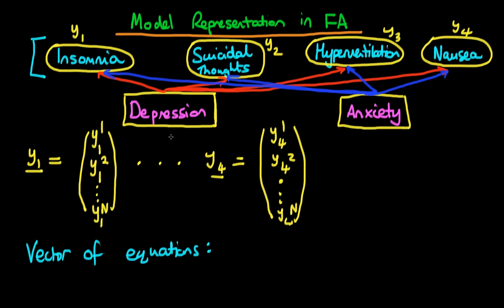So what exactly do I mean by that? Well, essentially what we can say is we can say that there are two unobserved factors, depression, which I've written here as eta1, and anxiety, which I've called eta2.